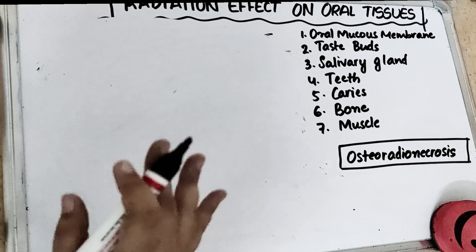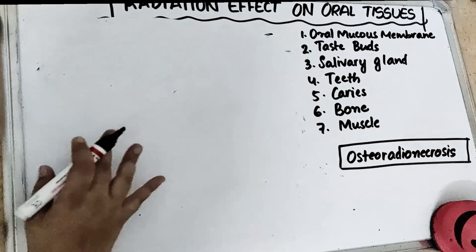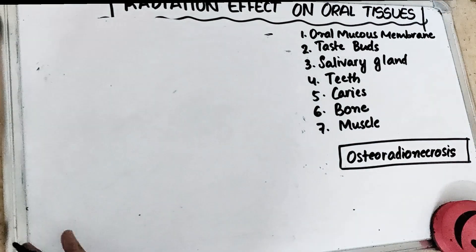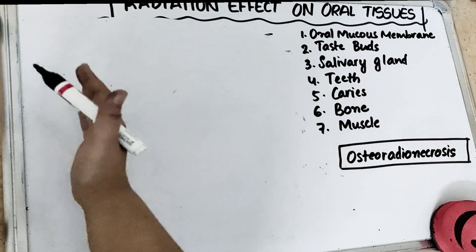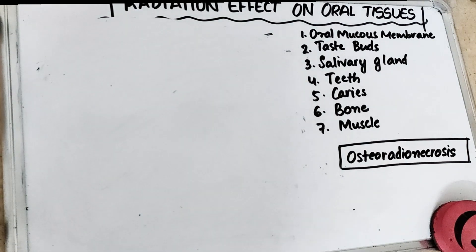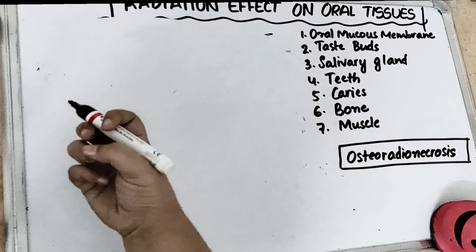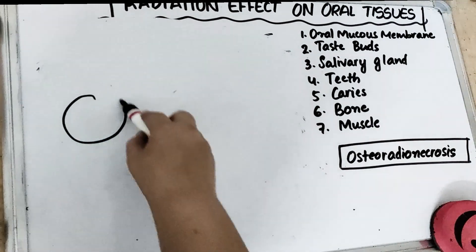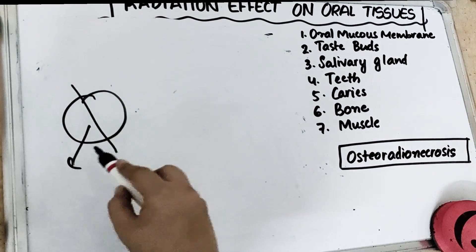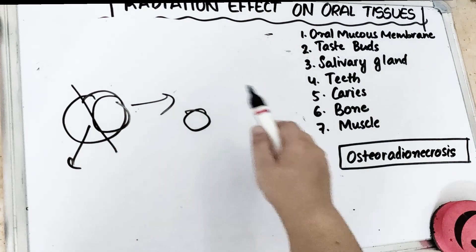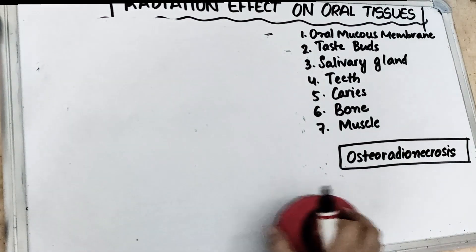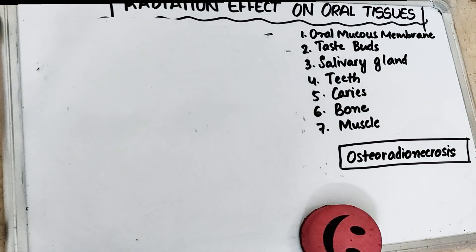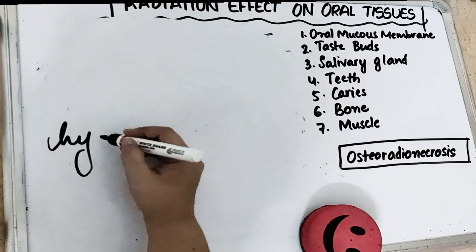Adult teeth are resistant to direct exposure to radiation — there is no direct effect on enamel, dentin, or cementum. However, in children taking radiation therapy, the tooth bud will be destroyed, meaning neither primary nor permanent teeth will develop properly. There will be growth retardation, and even with a very low dose, hypoplastic enamel formation is seen in children.